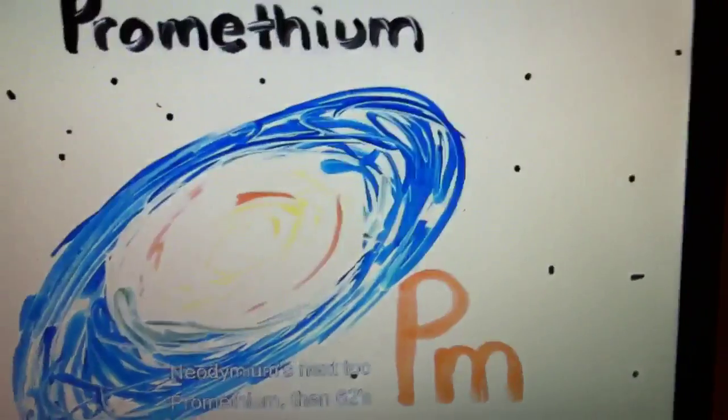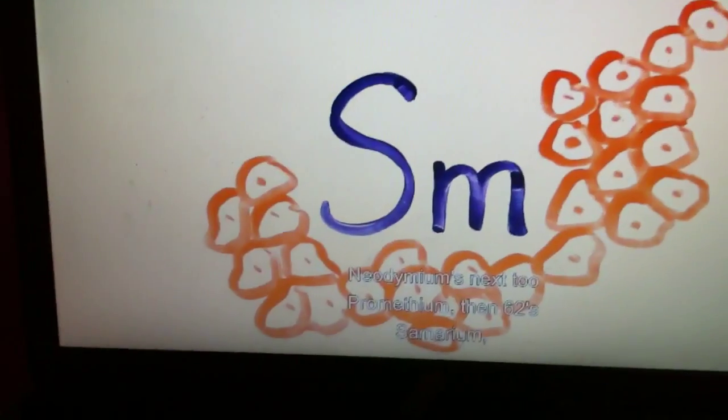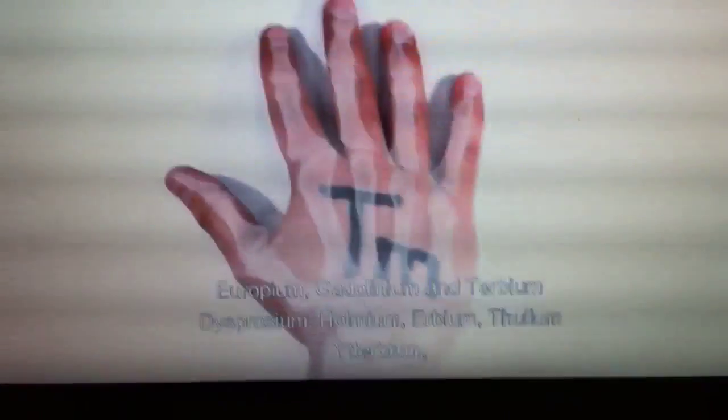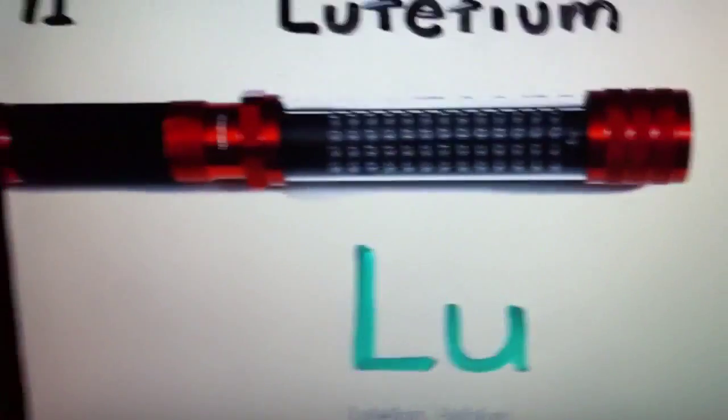Neodymium is next to promethium, and sixty-two's samarium, europium, gadolinium, terbium, dysprosium, holmium, erbium, thulium, ytterbium, lutetium.